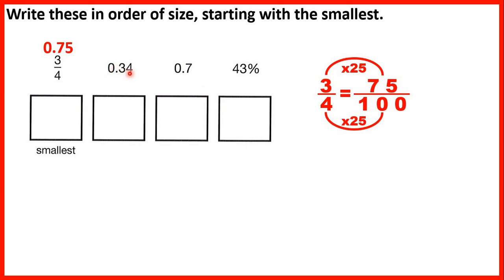Then we have 0.34, which is already a decimal. For 0.7, I like to put a zero on the end to make it 0.70, so that all numbers have the same number of decimal places. We can do that because 0.70 is the same as 0.7 — the zero just tells us we have no hundredths, which 0.7 already tells us. Now 43% — percentages are fractions over a hundred — so 43% is 0.43. So now we have 0.75, 0.34, 0.70 and 0.43.